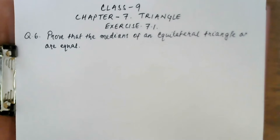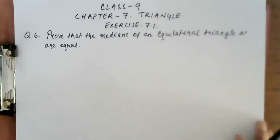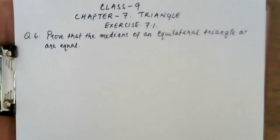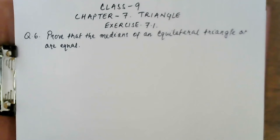Welcome back students. Today I would like to continue from our last class. We are dealing with Chapter 7, Triangles, Exercise 7.1. Today we'll be solving question number 6 from Exercise 7.1. The question is: prove that the medians of an equilateral triangle are equal.